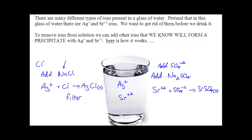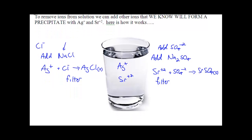I keep adding Na2SO4 until all of the Sr2+ is gone and the SrSO4 solid stops forming, then I filter. So what we've done is added NaCl to get rid of Ag+ and filtered away that solid, then added Na2SO4 to get rid of the Sr2+ and filtered away that solid. Now both ions are gone and the glass of water is clean. That is quantitative analysis — how to use your solubility table to remove ions from solution. We'll go over this in detail with trickier examples tomorrow.